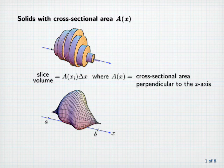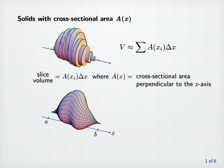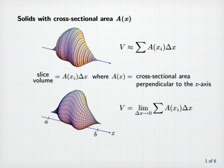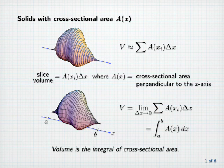Summing such layer volumes will provide an approximation to the volume of the solid, and as delta x gets smaller the approximation should improve. In the limit, as delta x approaches zero, we should obtain the exact volume. These approximations are Riemann sums that converge to the integral of the cross-sectional area over an appropriate interval on the coordinate axis. All this essentially just means that volume is the integral of cross-sectional area.